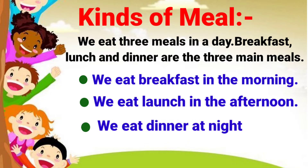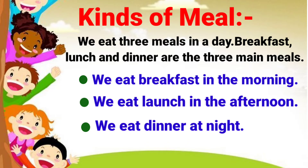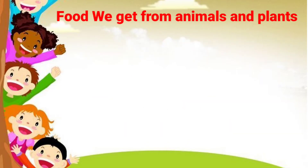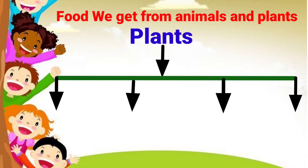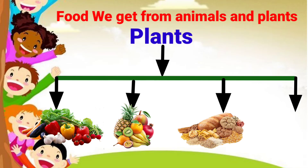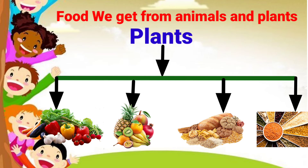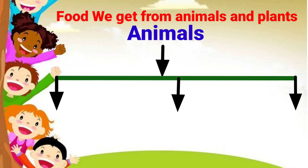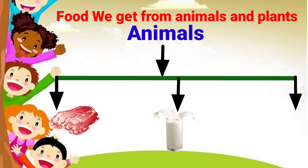We eat dinner at night. Food we get from animals and plants. Now we see which food we get from plants: vegetables, fruits, cereals and pulses. Now we see which food we get from animals: meat, milk and egg.